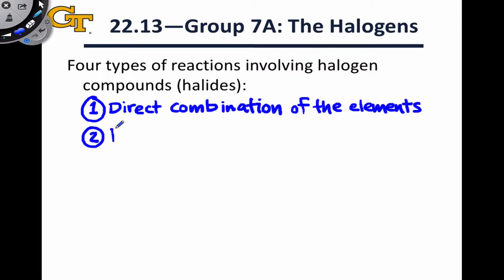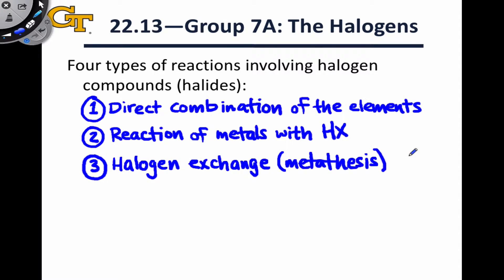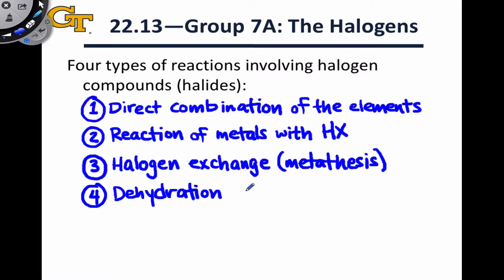The second is the reaction of metals with the hydrohalic acids HX — HBr, HCl, HI, etc. The third reaction type is halogen exchange, also known as metathesis, in which halogen atoms in two different compounds are exchanged for one another. The fourth reaction type is the dehydration of halide salts, which can be facilitated by drying agents that often themselves contain halogens.